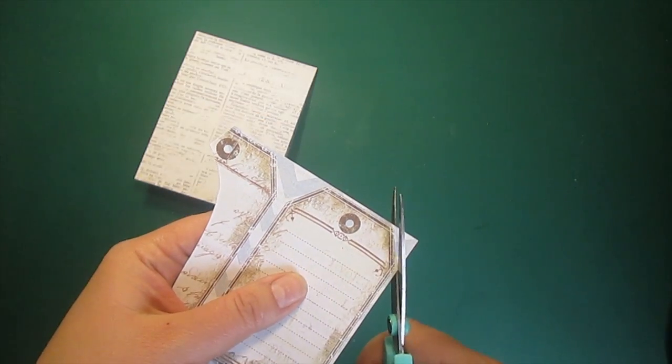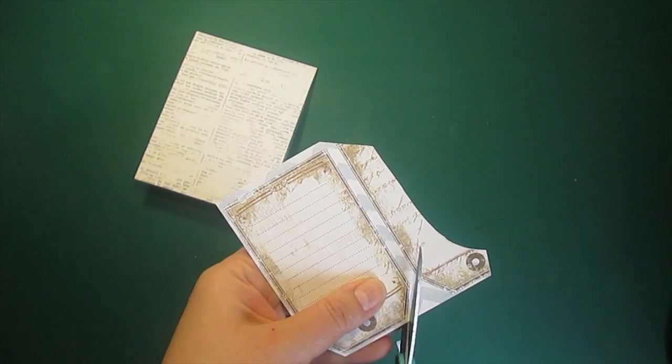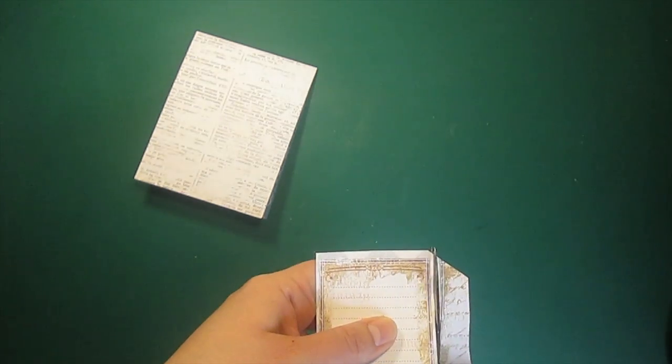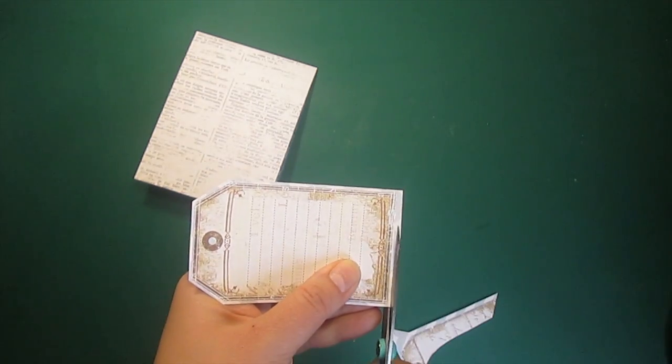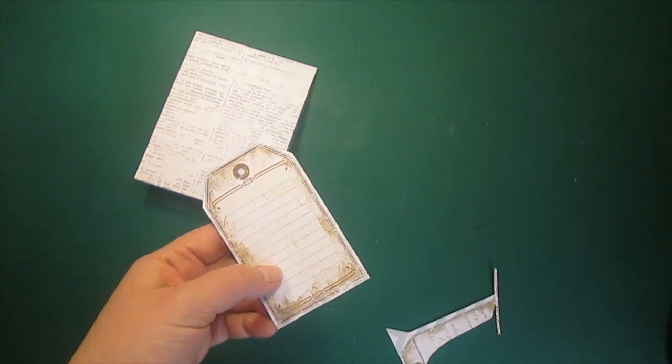For the card I've made a base out of pattern paper. It is standard size 4 and a quarter by 5 and a half inches. The tag is from the same collection. I'm just going to cut it out and then distress the edges.